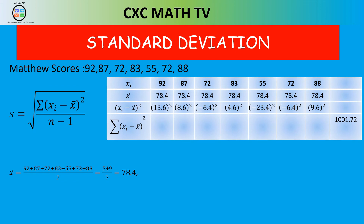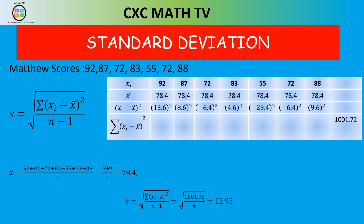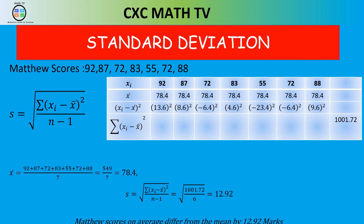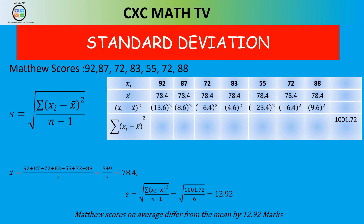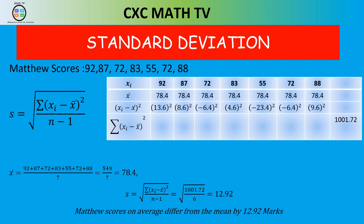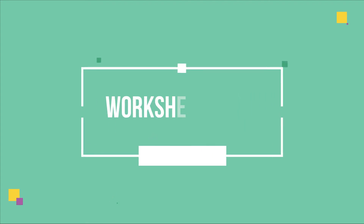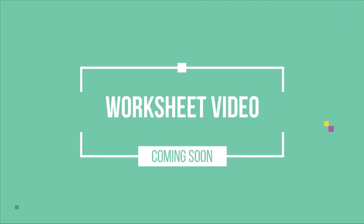Divide 1001.72 by (n−1). There are 7 test scores, so n−1 = 6. Dividing gives 1001.72 ÷ 6, then take the square root to get 12.92. So Matthew's scores differ from the mean by 12.92 marks on average — that's his standard deviation. We'll have a worksheet video with more standard deviation questions.